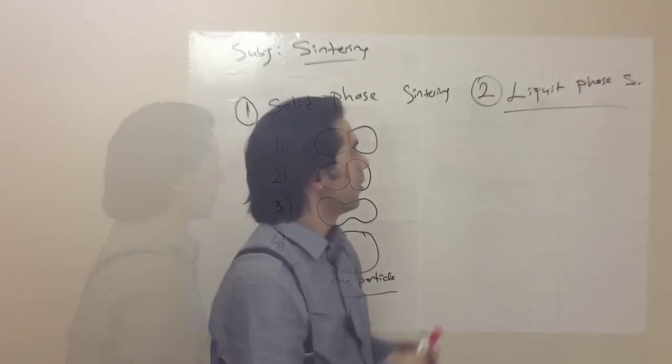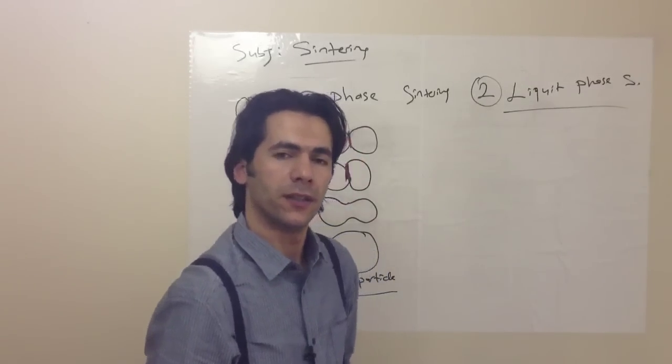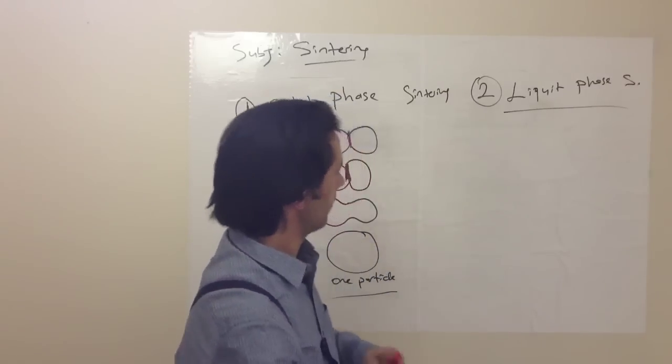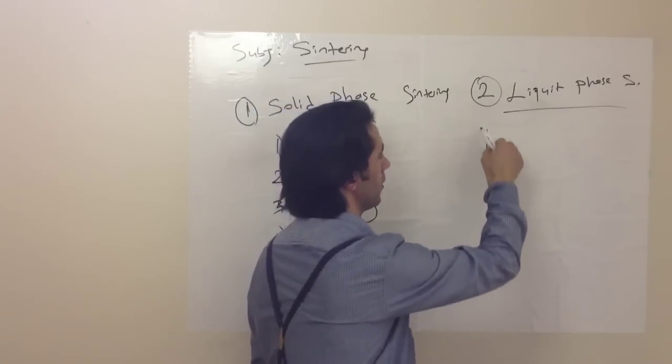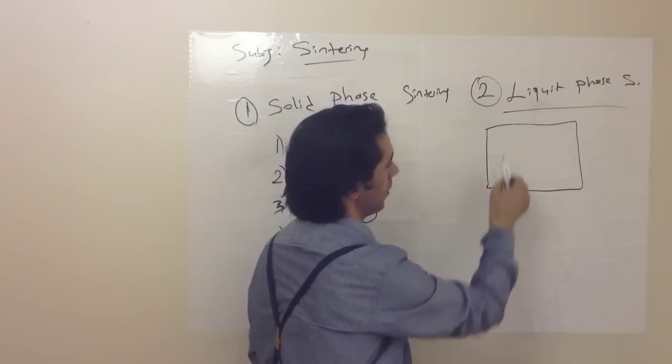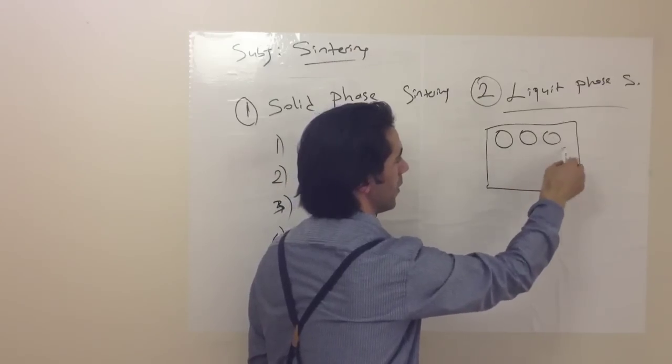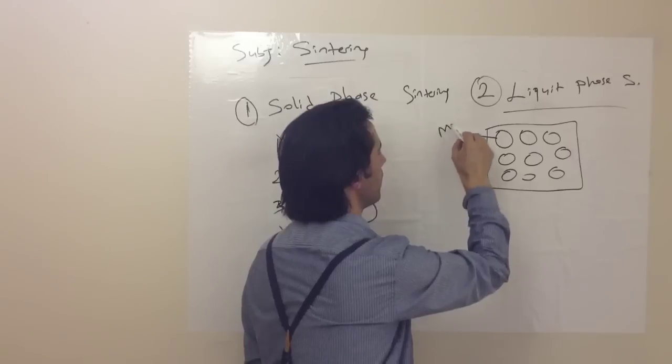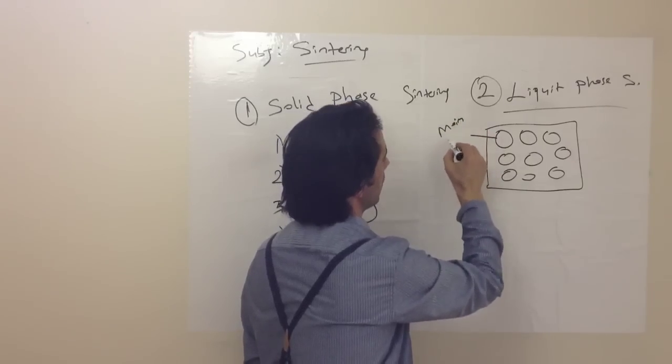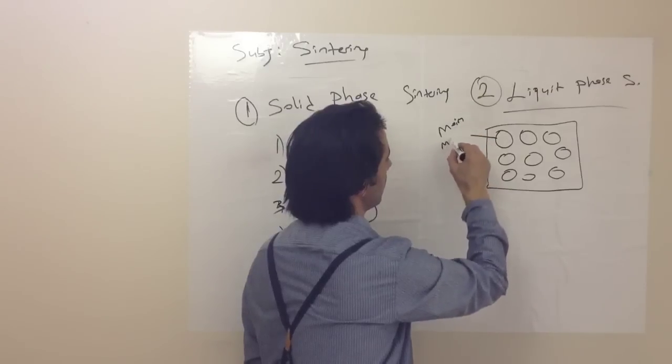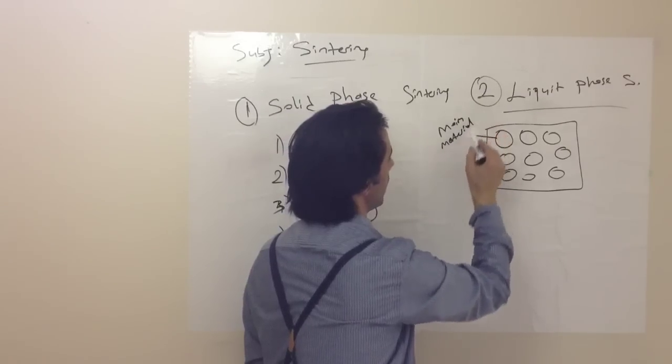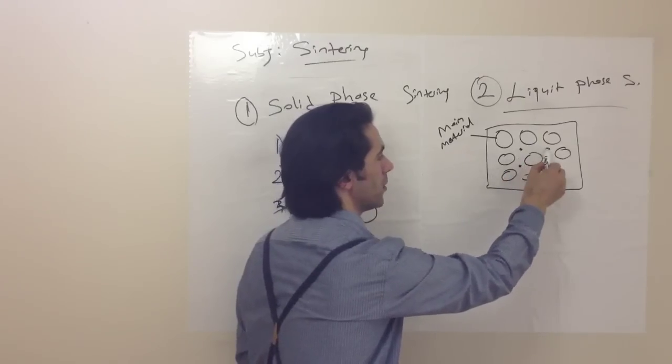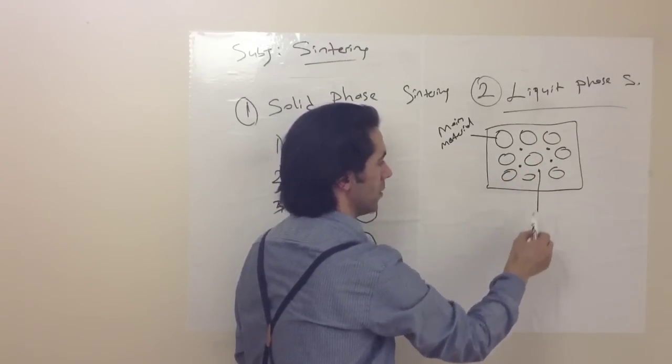As for liquid phase sintering, we use an additive in the main material. For example, this particle has a high temperature melting point - our main material. And this has a lower temperature melting point - this is the additive.